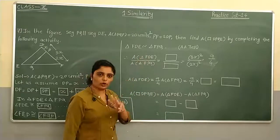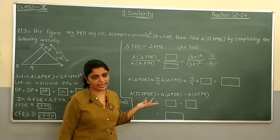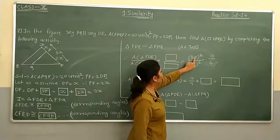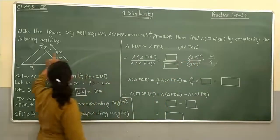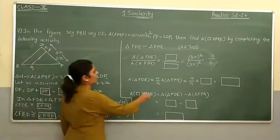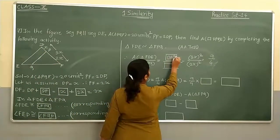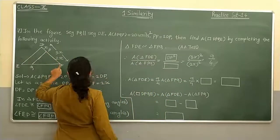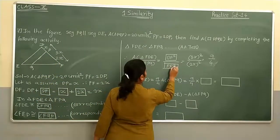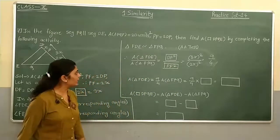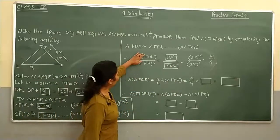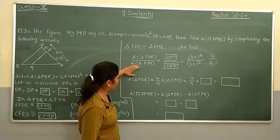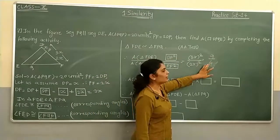Now from the similar triangles, we consider the corresponding sides: DF equals 3X corresponding to PF equals 2X. So area of triangle FDE upon area of triangle FPQ equals DF squared upon PF squared equals (3X)² upon (2X)² equals 9X² upon 4X² equals 9 upon 4.